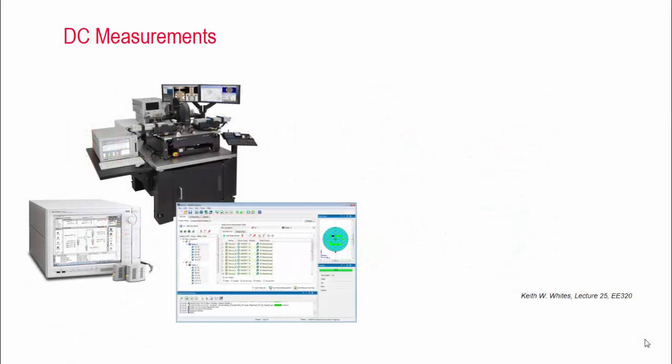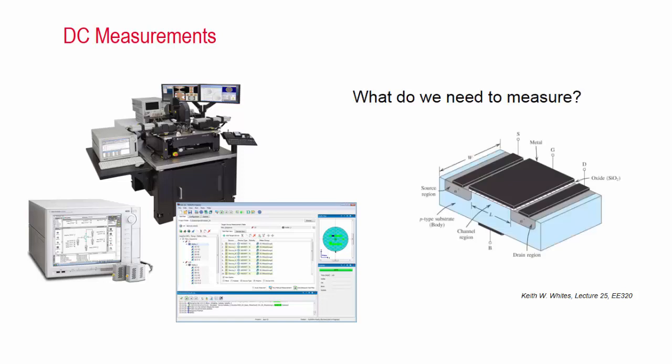All modeling efforts sit on a foundation of accurate measurement data. With not accurate data, one would be fitting wrong results, which will lead to big problems in circuit design and eventually the lab bench. On each device, what exactly do we need to measure?